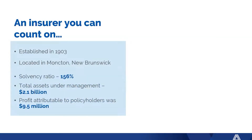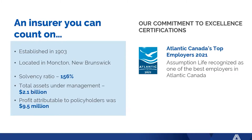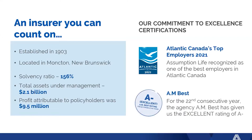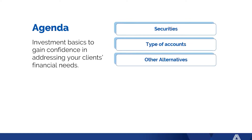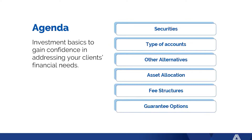Thank you, Alex. Thank you everybody for being here today. So today we're going to go over what we call the investment basics. A little bit about Assumption Life — we were established in 1903, located in Moncton, New Brunswick. We have a solvency ratio of 150.56%, total assets under management of $2.1 billion, and profit attributable to policyholders of $9.5 billion. We were nominated as Atlantic Canada's top employer in 2021, and we have a credit rating of A minus AM Best — the highest credit rating for organizations of our size. On the agenda today: securities, type of accounts, other alternatives, asset allocation, fee structures, and guaranteed options.